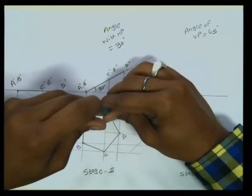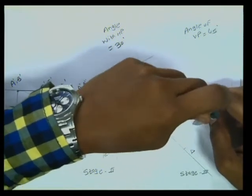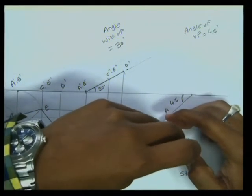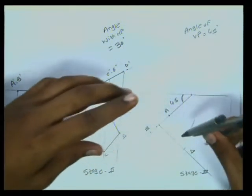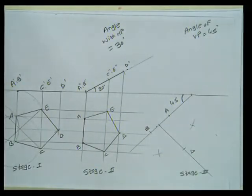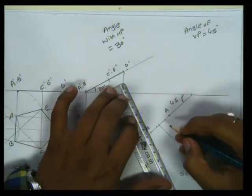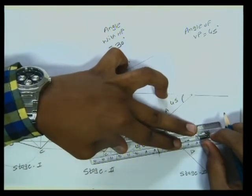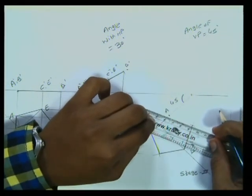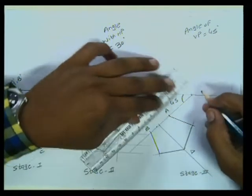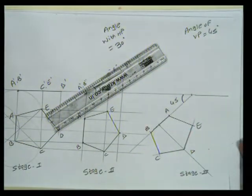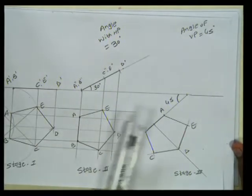We have got points A, B, and D. With respect to these: take A as center, AC as radius, put an arc; take B as center, BC as radius, put an arc; take D as center, DE as radius, put arcs on both sides and join them. You will get the perfect replica of this with the HP angle incorporated.